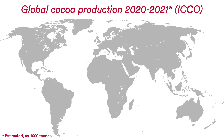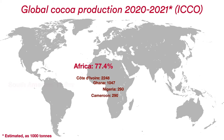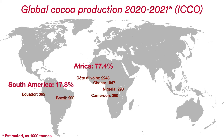Most of all cocoa, about 70%, comes from West Africa, with Ivory Coast and Ghana by far being the two largest producers. But Latin America, the Caribbean, Asia, and Oceania are also important producing regions, and about 5 million tons of cocoa are produced globally each year.